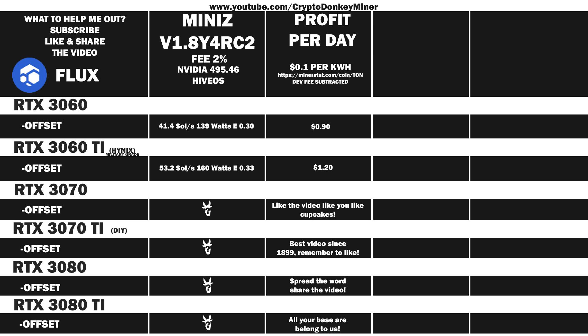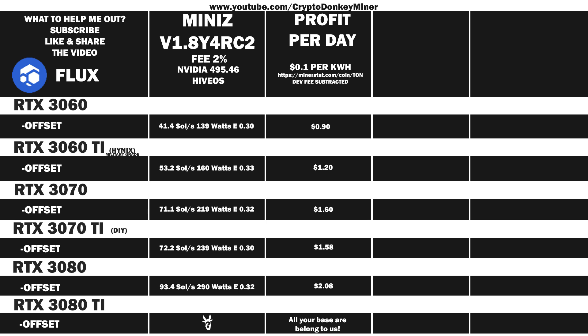Now let's have a look at the average result for the RTX 3070 LHR: 71.7 solutions per second at 219 watts, which gives an efficiency of 0.32. For that you'll earn 1.6 dollars per day. Now it's time to have a look at the average result for the RTX 3070 Ti: 72.2 solutions per second at 239 watts, which gives an efficiency of 0.30. That will earn you 1.58 dollars per day — and that is actually better than I expected when it comes to efficiency. Usually the RTX 3070 Ti is much worse than the 3070, but in this case it's a little bit worse, which is in the okay range I guess. Let's move on and have a look at the average result for the RTX 3080 LHR: 93.4 solutions per second at 290 watts, which gives an efficiency of 0.32. For that you'll earn 2.08 dollars per day.